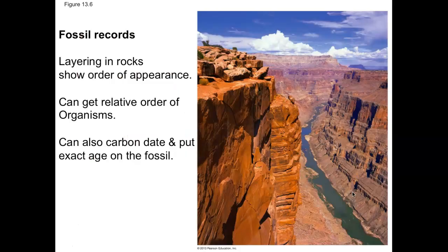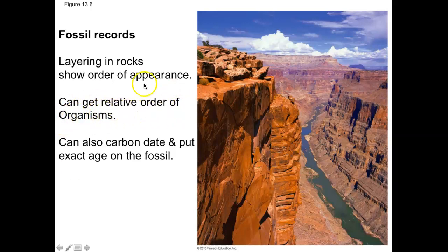With fossil records, scientists can look at where fossils appear in the earth. If you dig up something close to the surface, it's a recent organism. But if you go down half a mile or a mile into the earth, the bones you find have been there much longer. So you get a relative order of organisms by their depth. However, you can also put an exact date on a fossil through carbon dating.